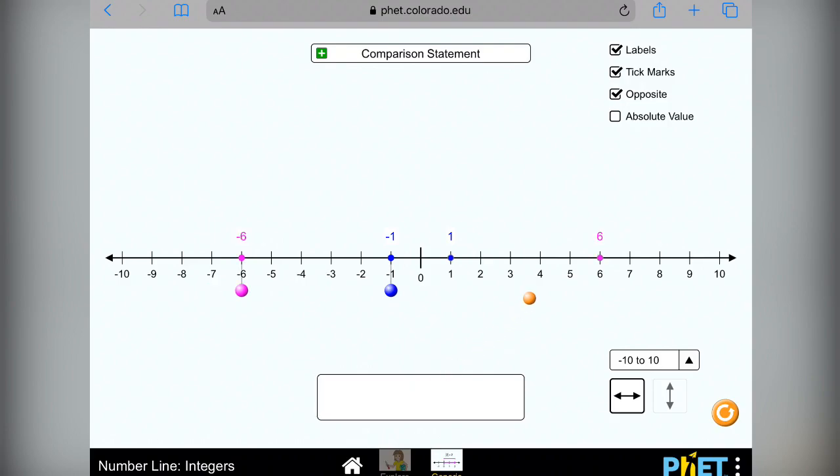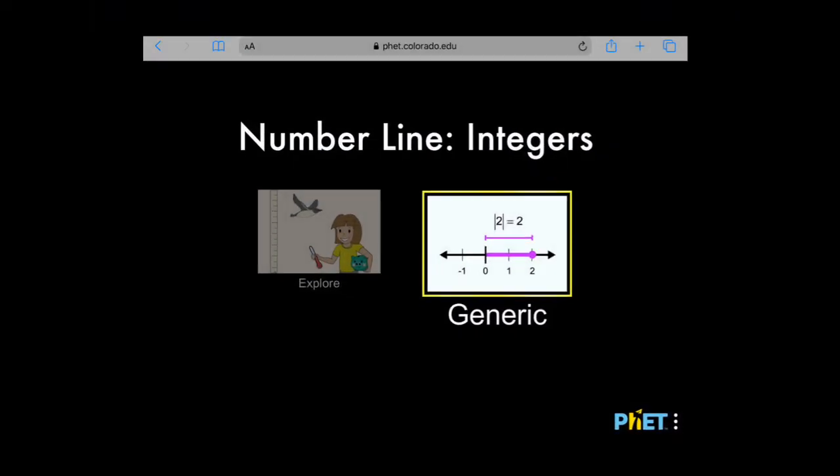And again, you see how it's moving along the number line. Same with the yellow. Each number is the same distance from 0 on the opposite side. That is why they're called opposites.